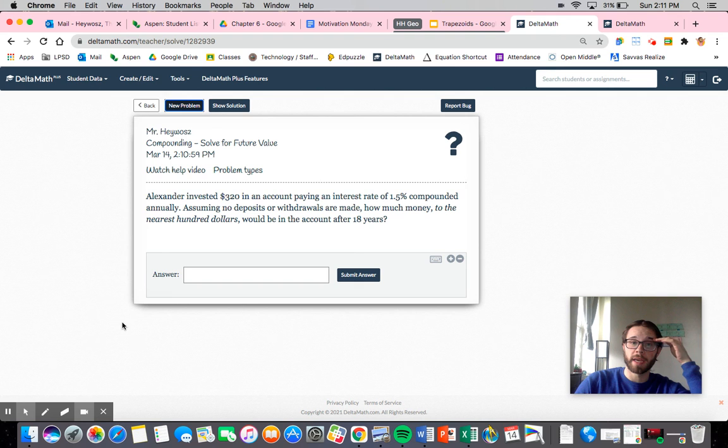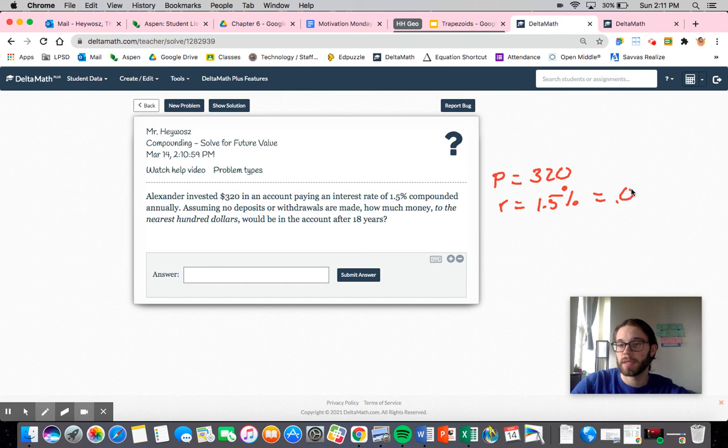We are investing $320 in an account paying an interest rate of 1.5% compounded annually. Assuming no deposits or withdrawals are made, how much money to the nearest $100, be careful what it tells you to round to, would be in the account after 18 years. Let's just set up what we know. Our P is going to be $320. Our rate is going to be 1.5%, which is equal to 0.015. Our t is 18. And it's compounded annually, which is great to know. When you see that it's compounded annually, it's only compounded once in a year.